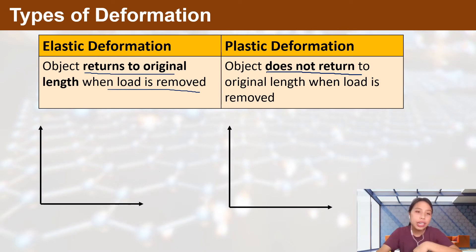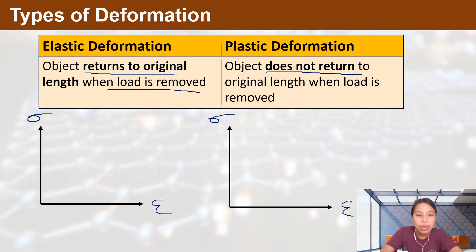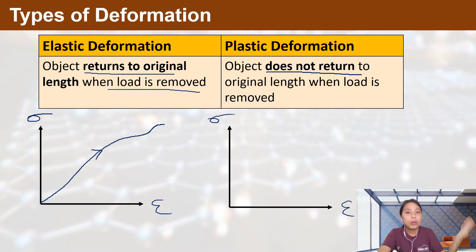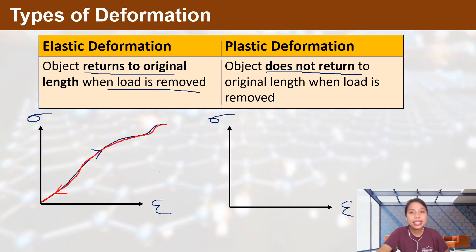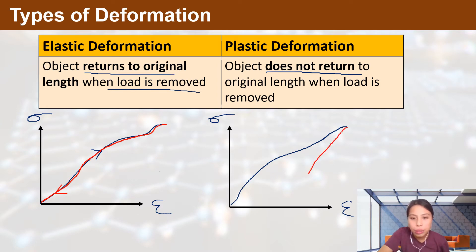There are graphs we've looked at — I'll use stress and strain now instead of F and X, they have the same shape. If it's elastic, when you load the item you can have some weird curve — this is called the loading curve. If you take off the load, it should follow exactly the same curve back. If it does, it is elastic. But if you have some curve and when you remove the load it takes another path and goes somewhere else, that's the unloading curve, meaning it is plastic deformation.